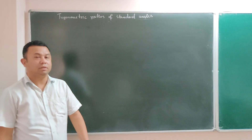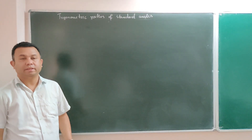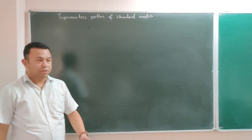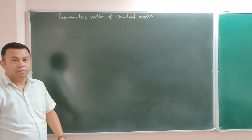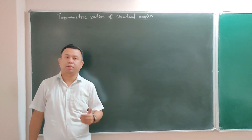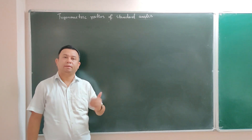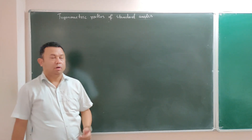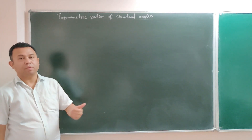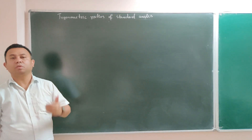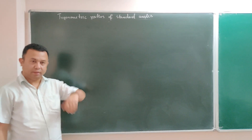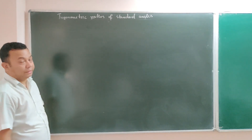Welcome back to our fourth maths class. In the previous two classes, we have seen about ratios — 6 trigonometric ratios: sin, cos, tan, cosec, sec, and cot. Their main ratios are: sin is perpendicular by hypotenuse, cos is base by hypotenuse, tan is perpendicular by base. The other three are the reciprocals of these three.